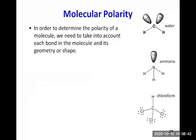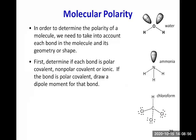To determine the polarity of a molecule, we need to take into account each bond and the shape or geometry of the molecule. First, determine if each bond is polar covalent, non-polar covalent, or ionic. If the bond is polar covalent, draw a dipole moment for that bond. Dipole moments are drawn only for polar bonds — for non-polar bonds, even with a small electronegativity difference, you do not draw an arrow.